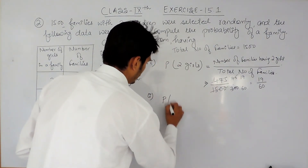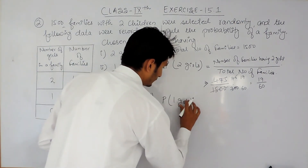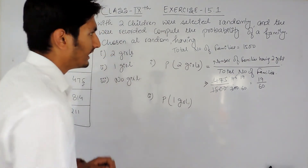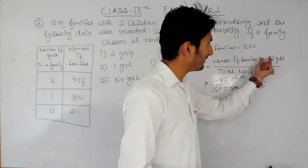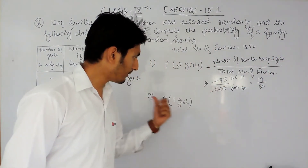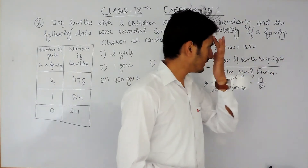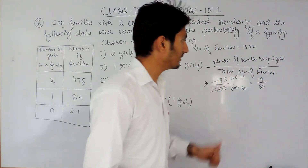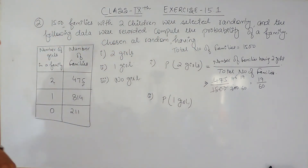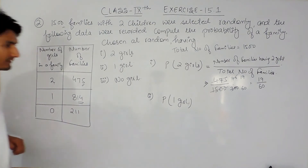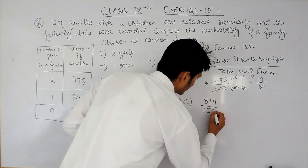Similarly, in the second case we have to find the probability of families having one girl. The formula remains the same: the number of families having one girl in the numerator, because the event is having only one girl, and in the denominator the total number of families. The number of families having one girl is 814 and the total number of families is 1500.